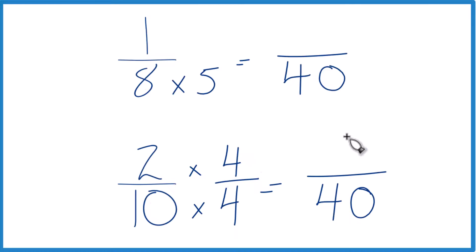2 times 4 is 8, and 8/40, that is an equivalent fraction to 2/10. Up here let's multiply the numerator by 5 and now we get 5/40.